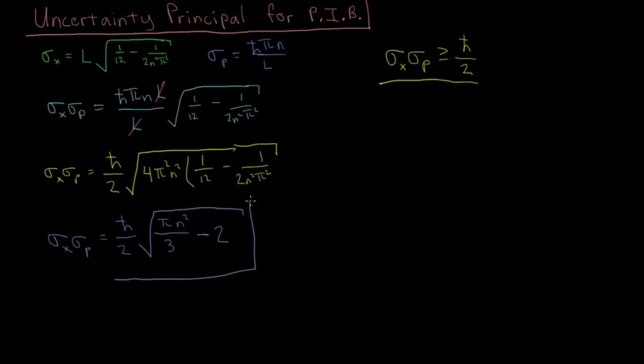So our final result is the product of the uncertainties equals this ℏ/2 times this constant. And the important thing is that this constant is greater than 1 for all n.